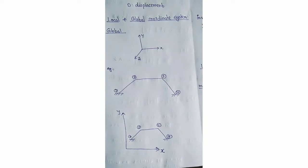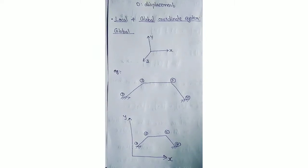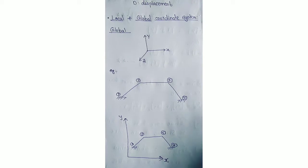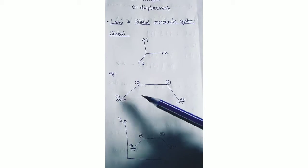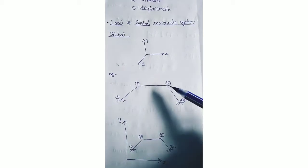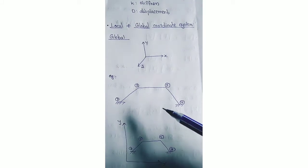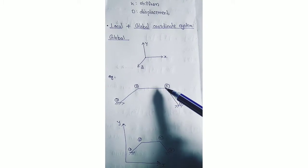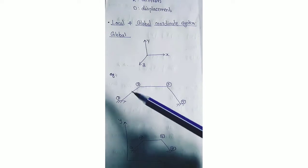Before going into numerical problems, we need to know certain basic things and terms. First is about local and global coordinate systems. Consider a frame structure having four joints, also called nodes, and three members: member 1-2, member 2-3, and member 3-4. So this structure has four joints or four nodes and three members.